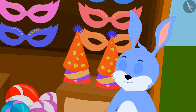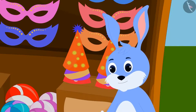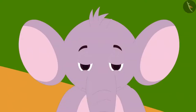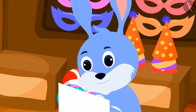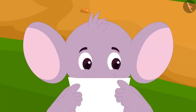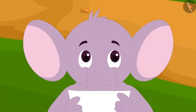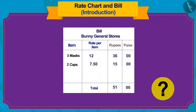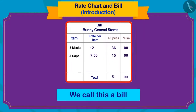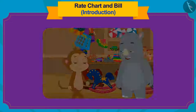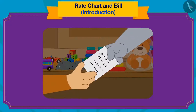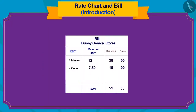Banni asks Appu if he wants to buy any other item, to which Appu denies. Banni immediately wrote something on a slip and handed it over to Appu. After looking at the slip, Appu could not understand anything. Have you ever seen a similar slip before? We call it a bill. Whenever we buy items from any shop, the shopkeeper gives us one such bill.